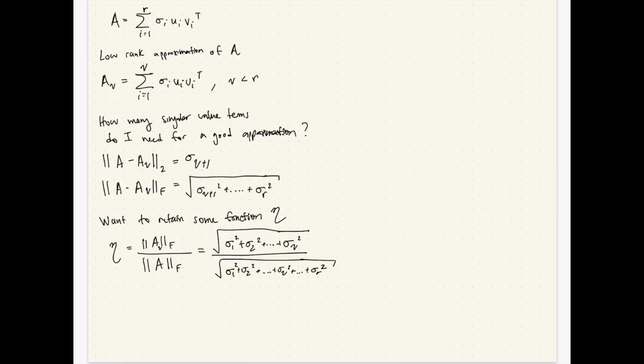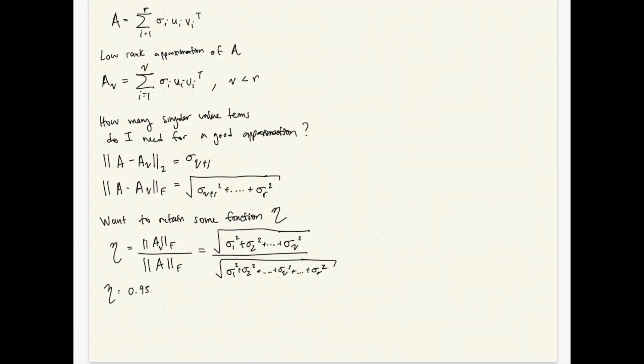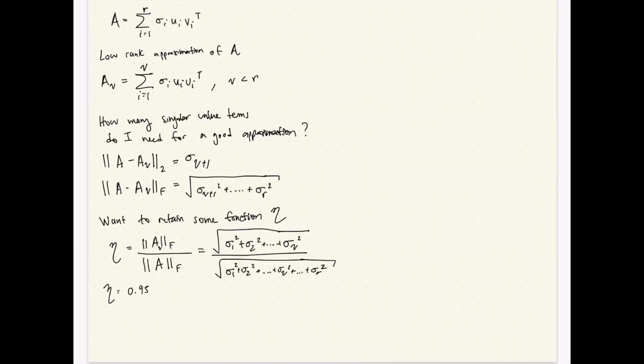I can say, I'll set eta equals 0.95, and I'll do this thing on the right-hand side until I get 0.95. So I'll go up to however many nu terms I need. Find nu such that eta equals 0.95. This is awesome.